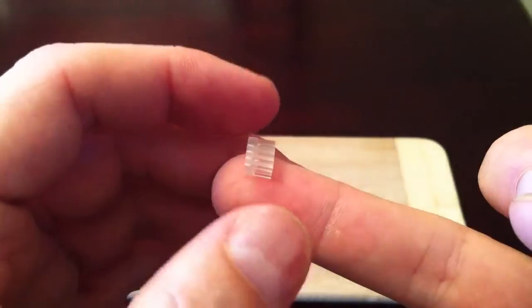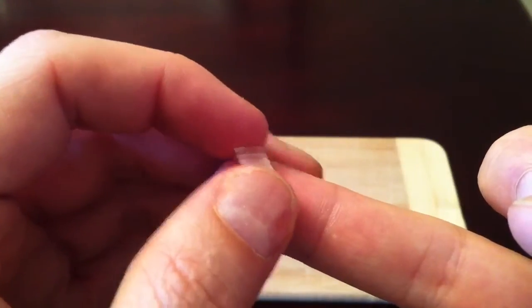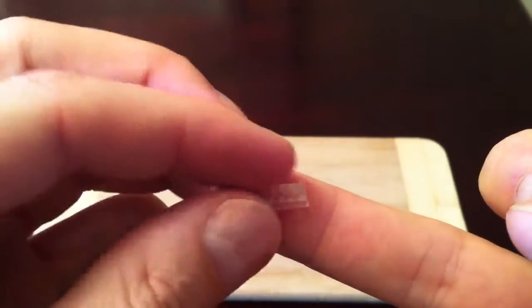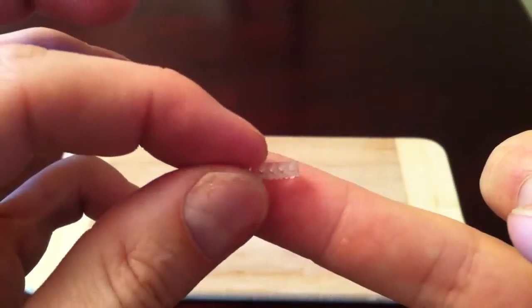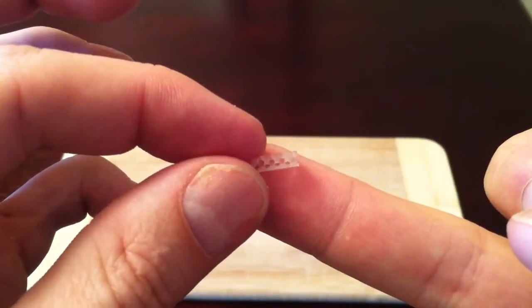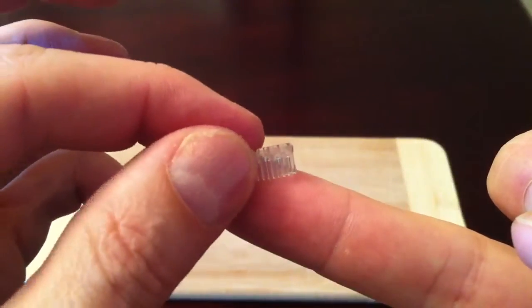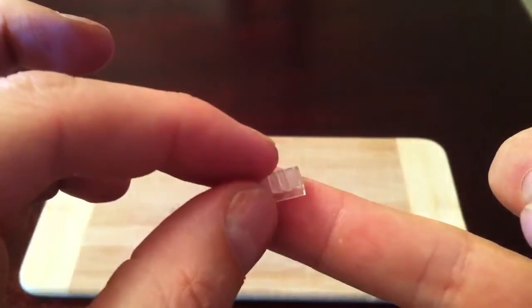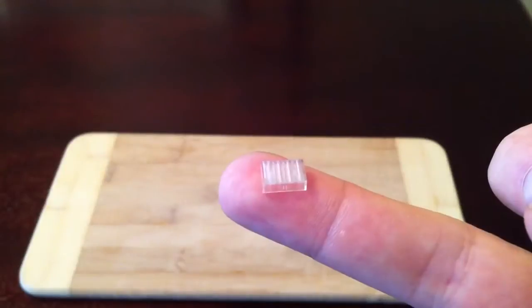We are now ready to install the plug onto the CAT6 cable. To make this job a little bit easier, we got a CAT6 plug that has an insert. We are going to be inserting all eight wires into this plastic insert prior to installing it into the actual CAT6 plug.